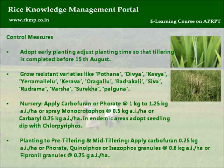From planting to pre-tillering and mid-tillering: Apply Carbofuran at 0.75 kg AI per hectare, or Forate, Coinolephos, or Isazophos granules at 0.6 kg AI per hectare, or Fipronil granules at 0.75 g AI per hectare.